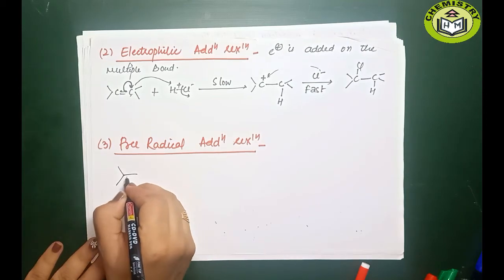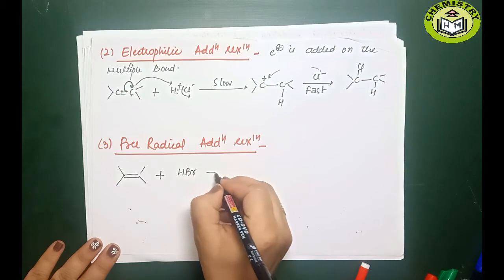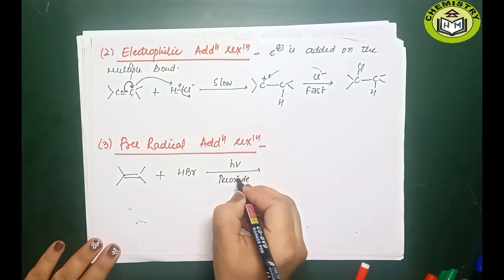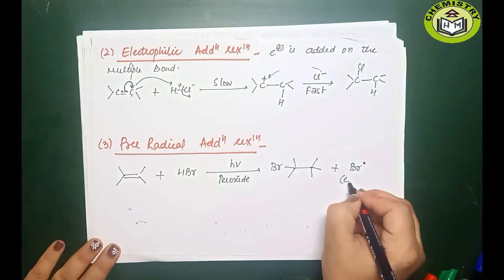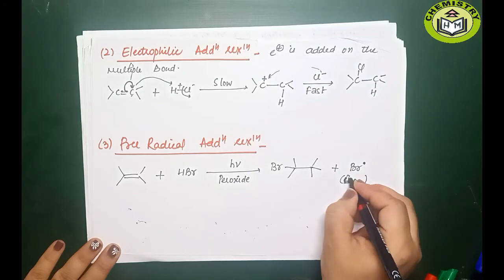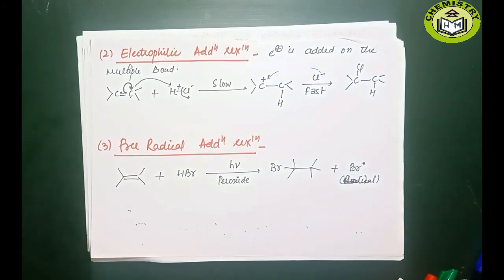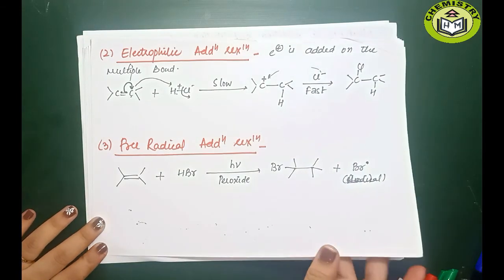Third is free radical addition reaction. Here the attacking species is a free radical. For example, alkene with HBr in the presence of hν and peroxide: a Br• radical is generated and attacks the alkene, and eventually Br is added to give the product. So to summarize: if nucleophile is the attacking species it is nucleophilic addition; if electrophile attacks first it is electrophilic addition; if free radical attacks it is free radical addition reaction. The third main type — elimination reaction — will be covered in the next video. Please subscribe, share with friends, and let me know how you find this content. Thank you so much.